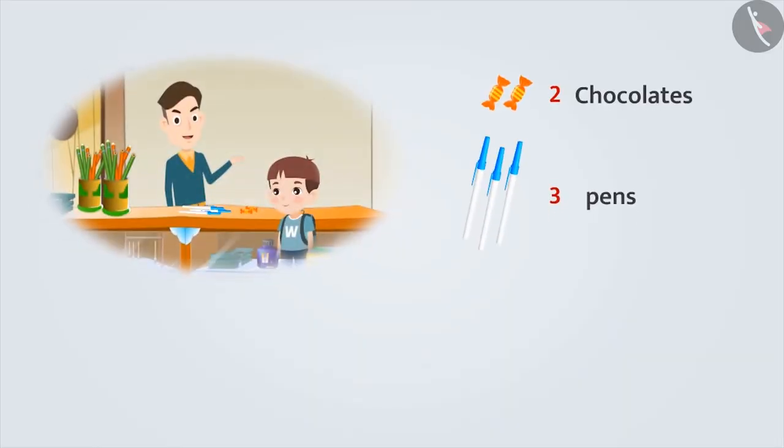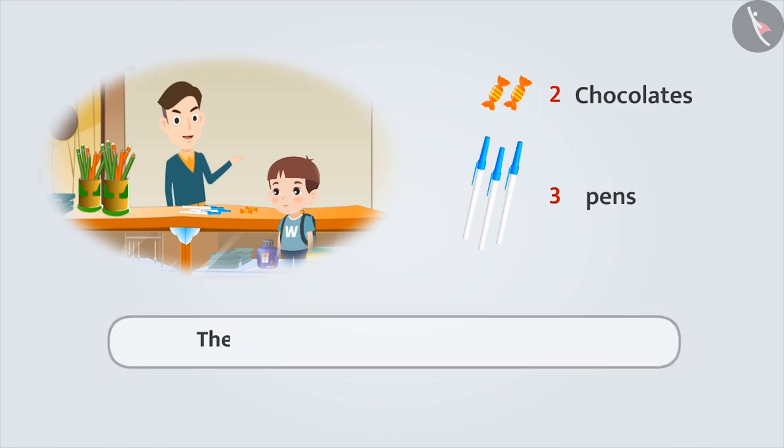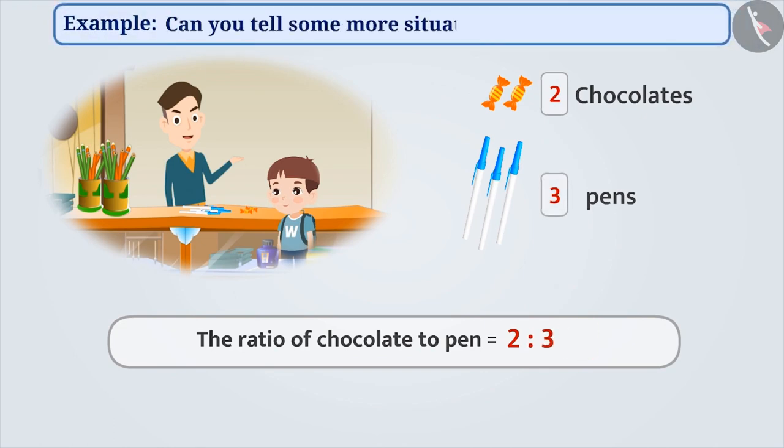Rahul purchased two chocolates and three pens from a shop. Here, we can say that the ratio of number of chocolates to the number of pens is 2 is to 3. Can you tell some more situations where ratio would be 2 is to 3?